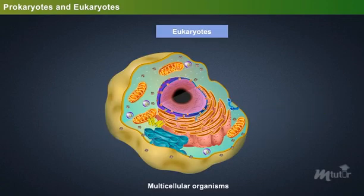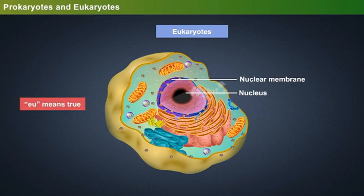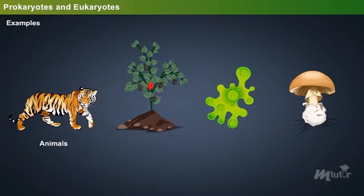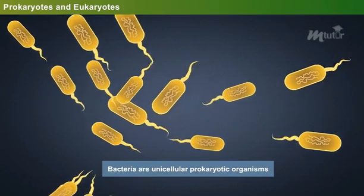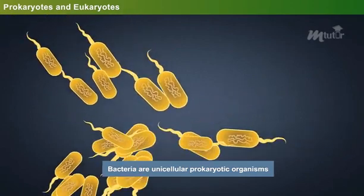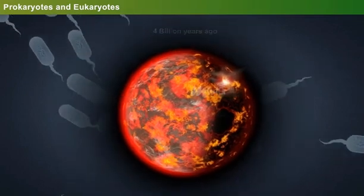Eukaryotes are often multicellular organisms that contain a well-defined nucleus surrounded by a nuclear membrane. In simple terms, 'eu' means true and 'karyon' means nucleus. Examples: animals, plants, algae and fungi. Bacteria are unicellular prokaryotic organisms believed to be the first life form evolved on the Earth, about 4 billion years ago.